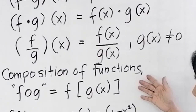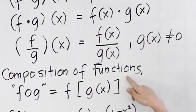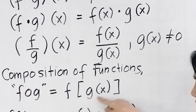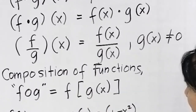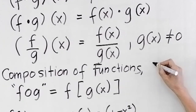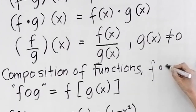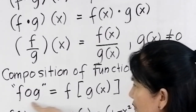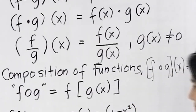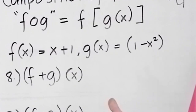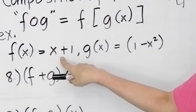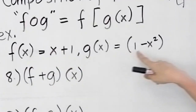Before the examples, let's also tackle composition of functions. f∘g of x, written as f(g(x)), means you apply g first, then f. For our examples, let f(x) = x + 1 and g(x) = 1 - x².